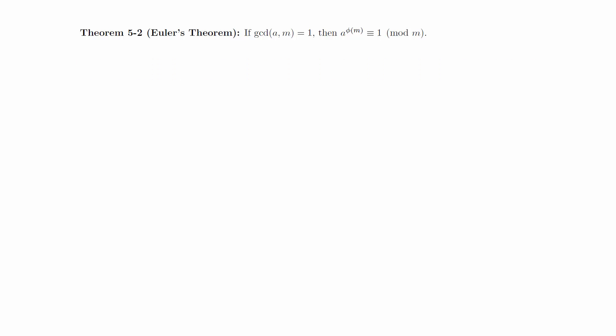We will now prove Euler's Theorem. Let r1, r2 up to r sub phi of m be a reduced residue system modulo m. Since the GCD of a and m is 1, if we multiply each of these by a, the list will still consist of values that are relatively prime to m.